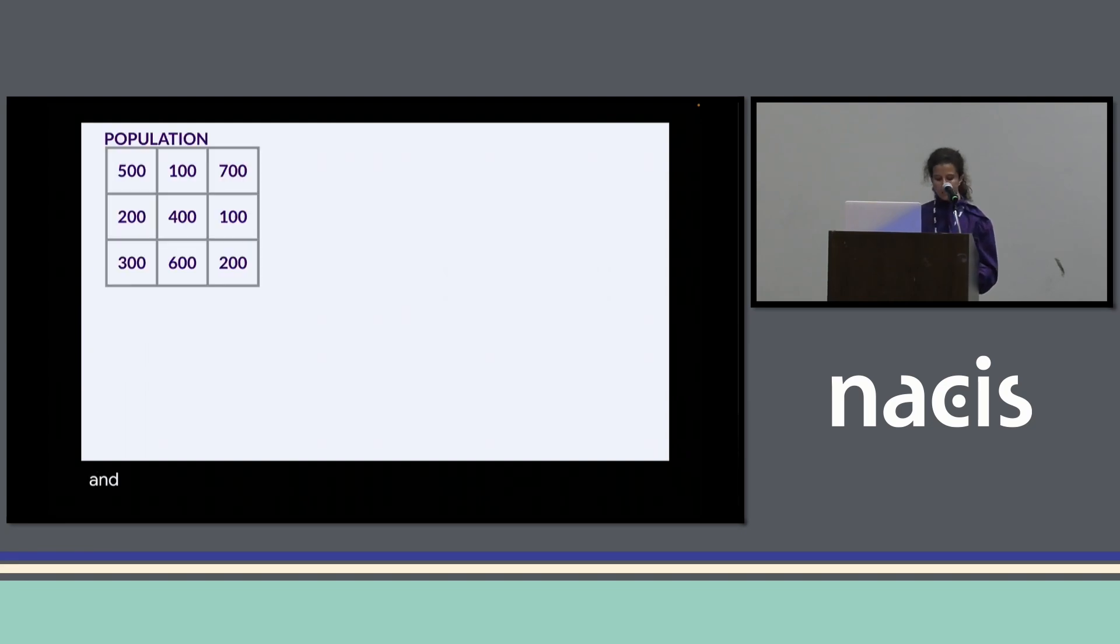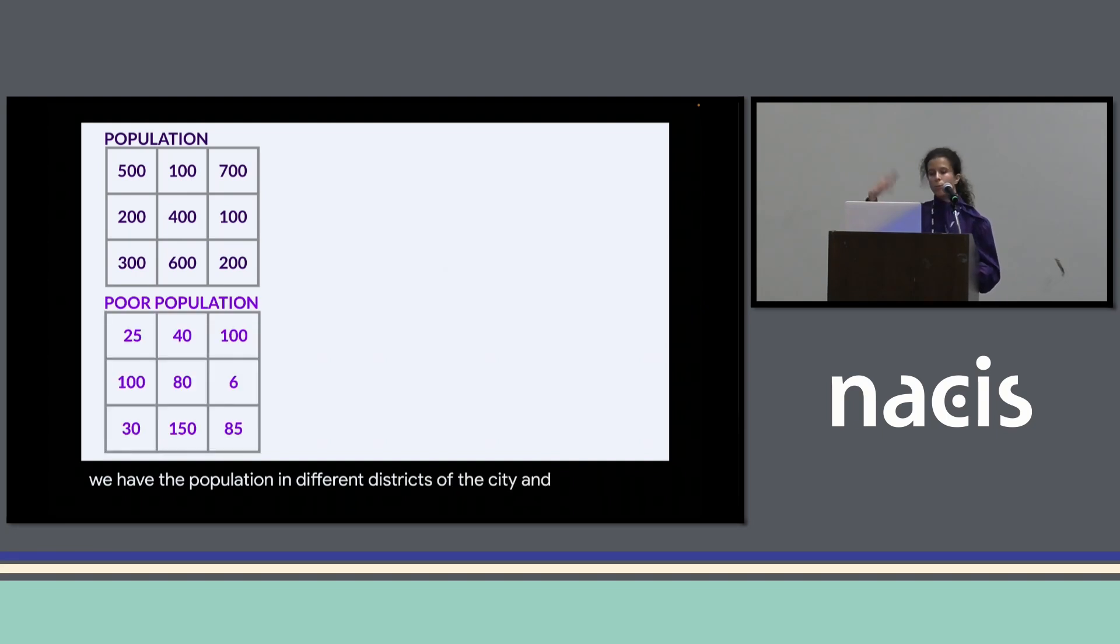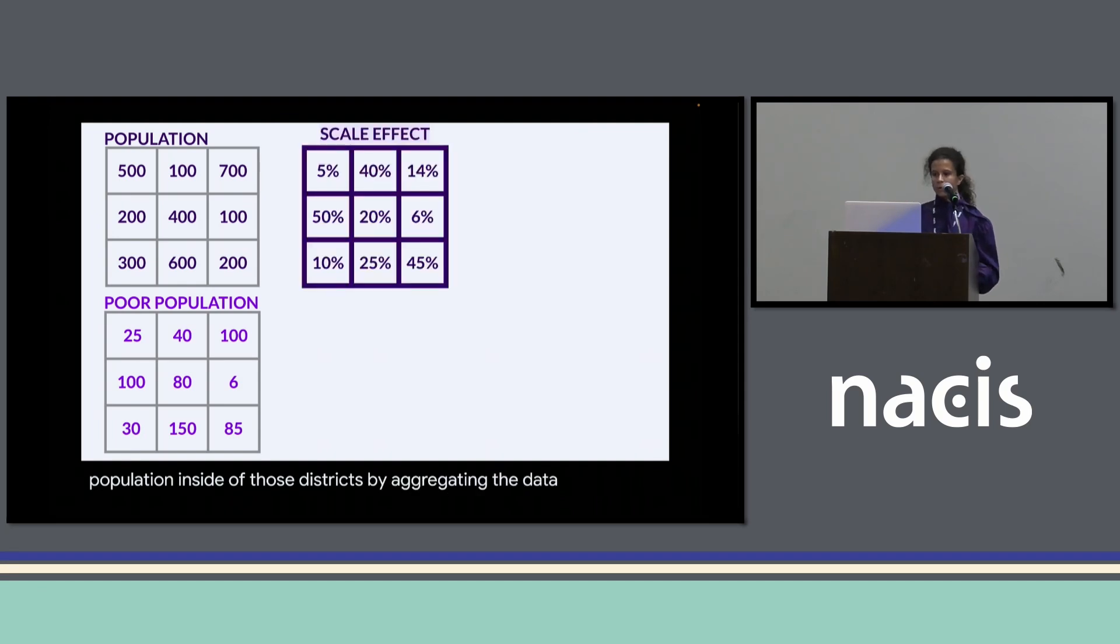In fact, by aggregating data, the analysis faces two main problems. If we have the population in different districts of a city and the poor population inside of those districts, by aggregating the data, we first get a scale effect.